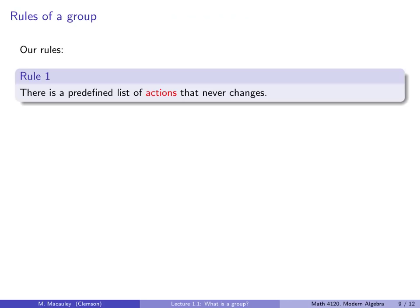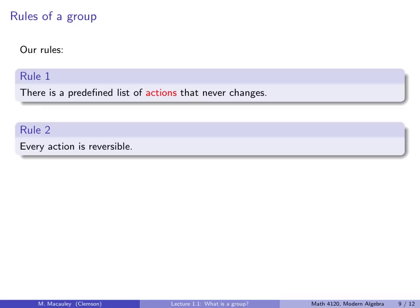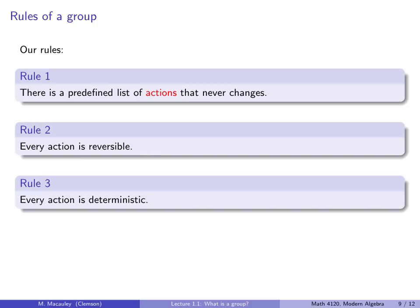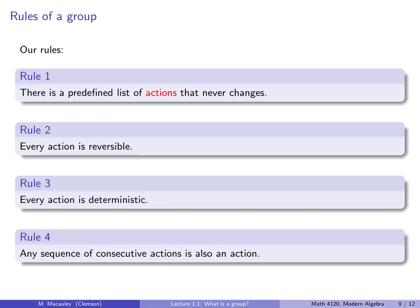So rules of a group. Rule one, there is a predefined list of actions that never changes. Rule two, every action is reversible. Rule three, every action is deterministic. And rule four, any sequence of consecutive actions is also an action.